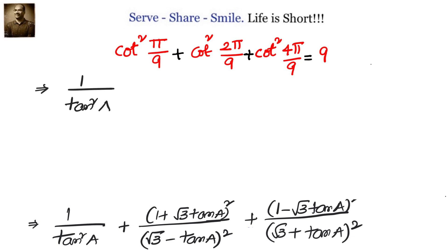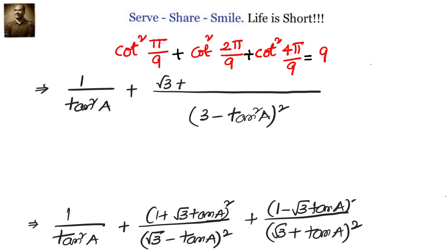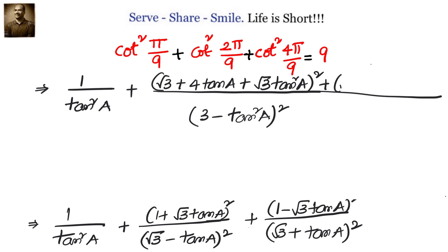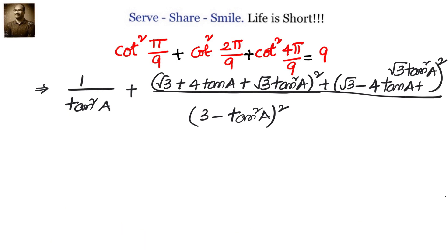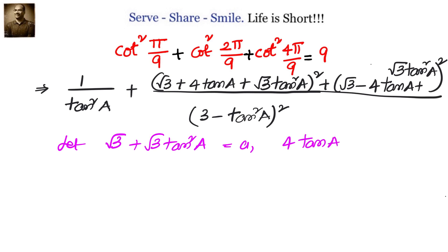You can see that the same terms appear with plus and minus, meaning we can do some simplification. Leave 1 by tan square A as it is and take the LCM. Using A squared minus B squared, we get 3 minus tan square A whole square in the denominator. In the numerator, we get root 3 plus 4 tan A plus root 3 tan square A whole square, plus root 3 minus 4 tan A plus root 3 tan square A whole square. Taking root 3 plus root 3 tan square A as our new A and 4 tan A as B, this becomes A plus B whole square plus A minus B whole square, which equals 2 into A square plus B square.